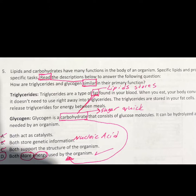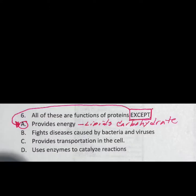Question number five looks like a lot of reading, but you didn't need to know about triglycerides and glycogen specifically. Just read the description and find the similarity — what they have in common. Reading triglycerides, the word 'fats' should have popped out. Reading glycogen, 'carbohydrates' and 'quick source of energy' popped out. The answer should have been D — both store energy used by the organism. You didn't have to know what a triglyceride was; you just had to know your biomolecule functions.